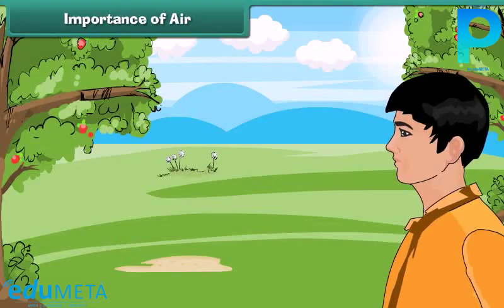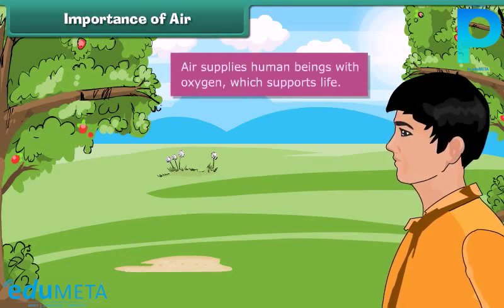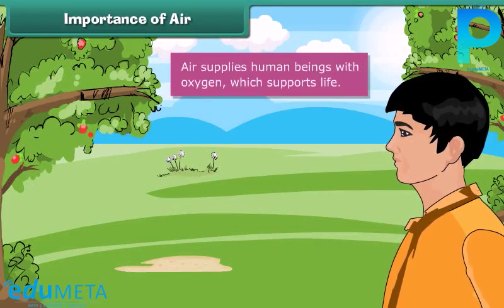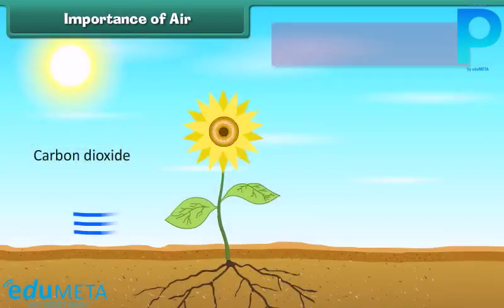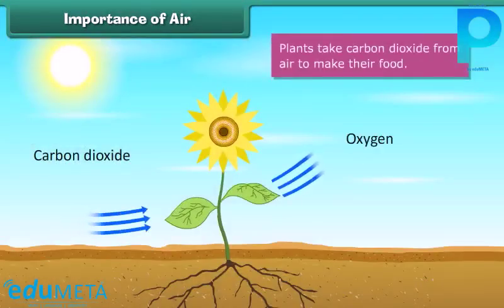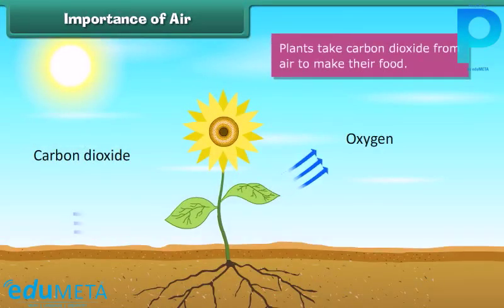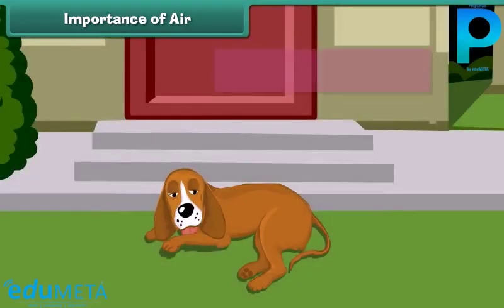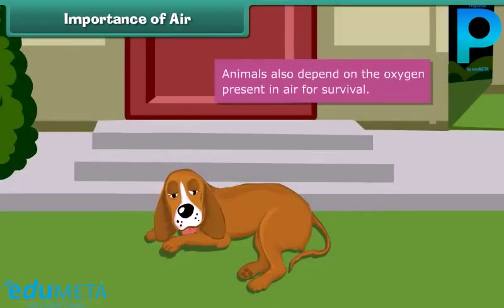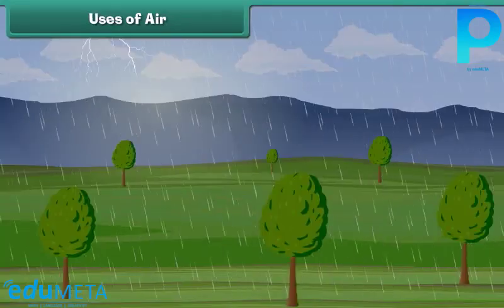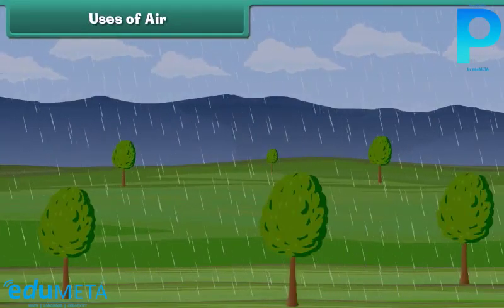Air supplies human beings with oxygen, which supports life. Plants take carbon dioxide from air to make their food. Animals also depend on the oxygen present in the air for survival.